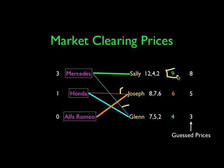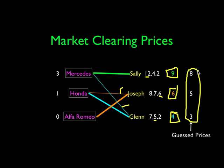Now we recompute the final happiness. Sally's happiness with the Mercedes is 9. Joseph ends up buying the Alfa Romeo for free, so he is happy 6. Glenn ends up with the Honda for 1, so his happiness is 4. Before we started, I guessed prices yielding happiness of 8, 5, and 3. But now we have 9, 6, and 4. By going up slowly and only adding to the price when there was a conflict, the overall happiness is maximized for the buyers. The guessed prices were a market clearing price, but not the best one. This technique finds the best market clearing prices — we're very conservative in raising prices, keeping the happiness numbers as high as possible.